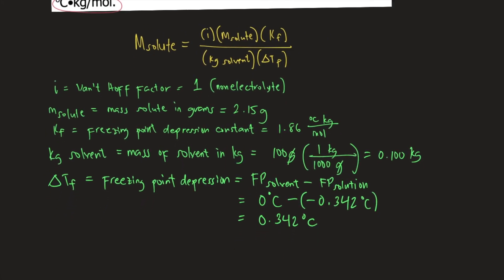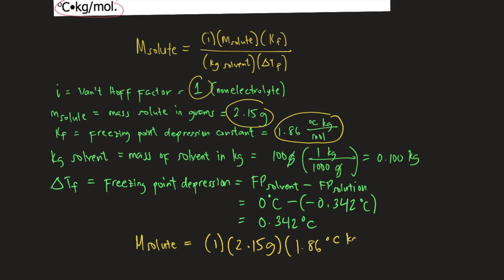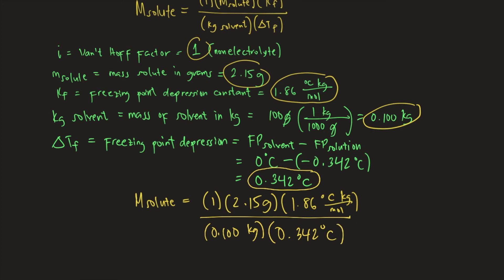Now that we have all the numbers, we plug them into the formula. Molar mass equals i (which is 1) times 2.15 grams times 1.86 degree Celsius kilogram per mole, divided by 0.100 kilograms times 0.342 degree Celsius. Kilograms cancel and degree Celsius cancels, leaving units of grams per mole.